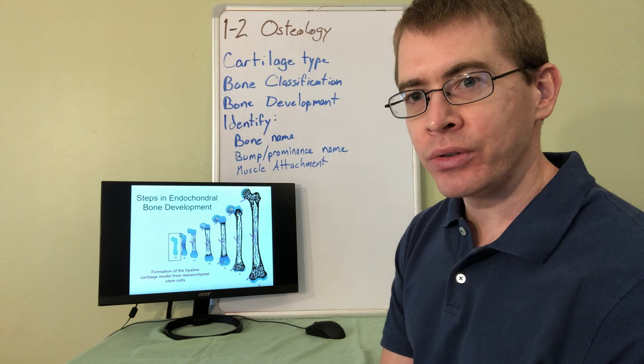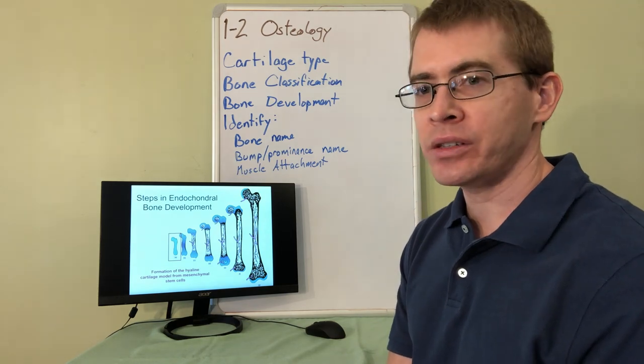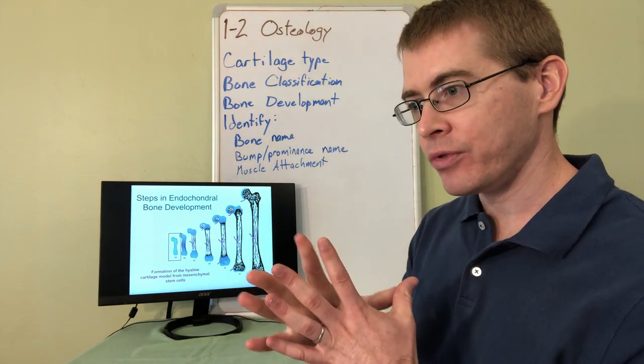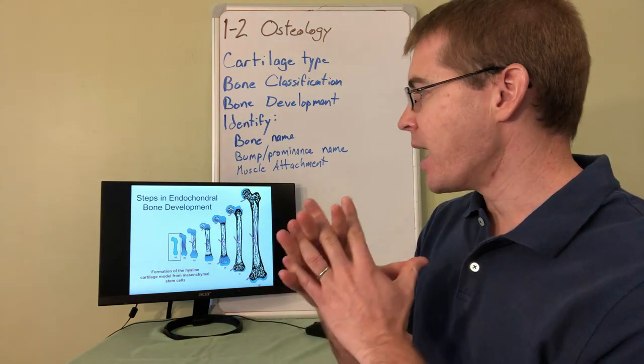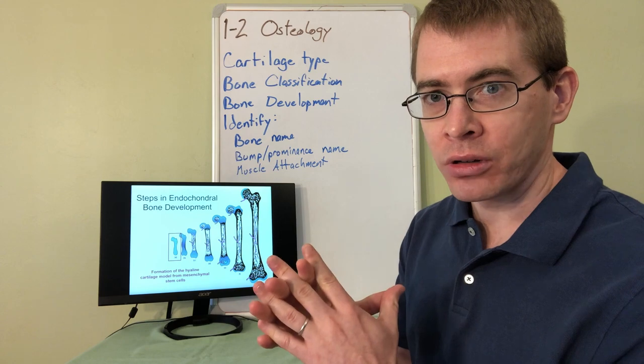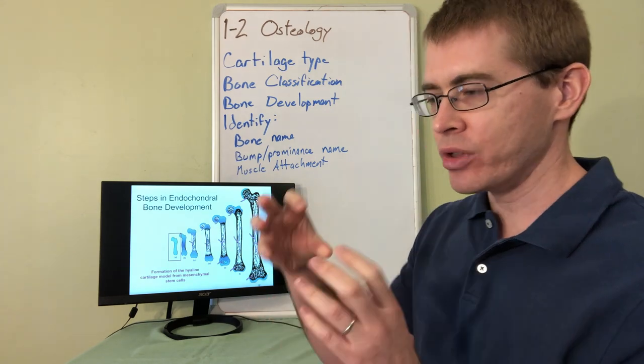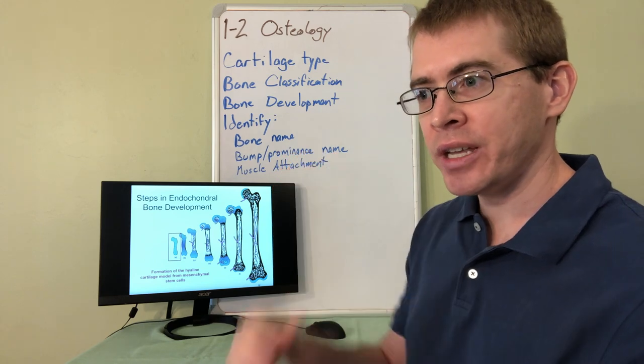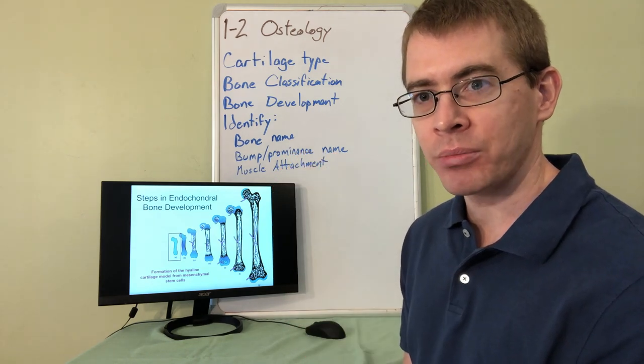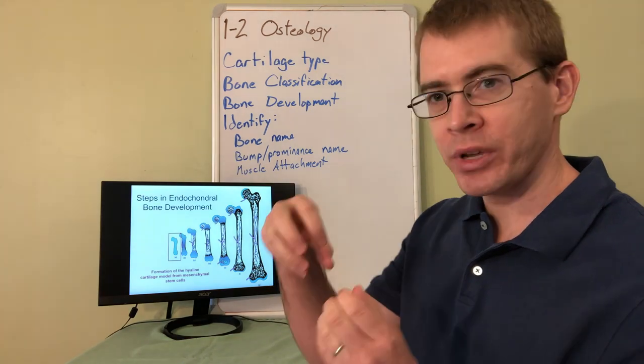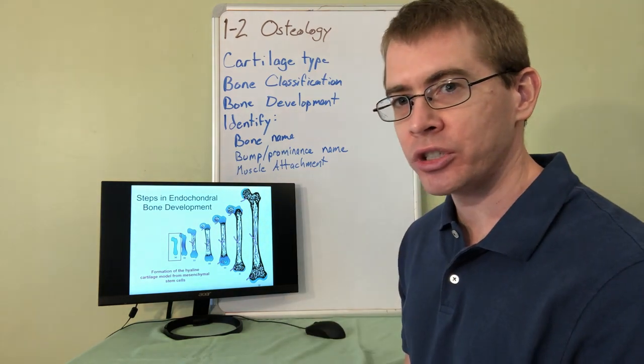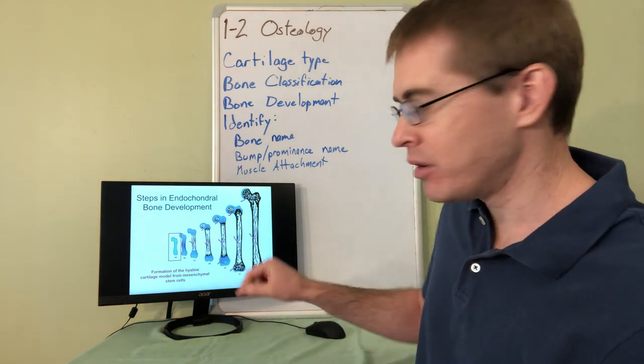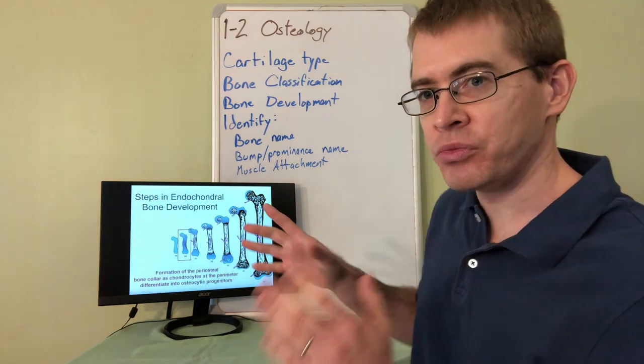Initially, bone forms through the condensation of mesenchymal stem cells. These mesenchymal stem cells form what's called a hyaline cartilage model, or bone model. So these mesenchymal stem cells get together in a tight group, differentiate into chondrocytes and chondroblasts, and end up forming the initial shape of the bone.